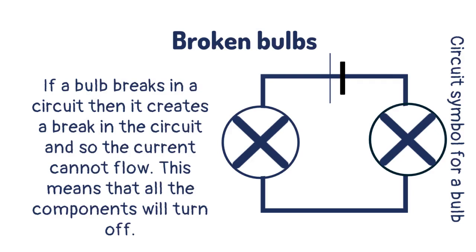If a bulb breaks in a circuit, then it creates a break in the circuit and so the current cannot flow. This means that all the components will turn off.